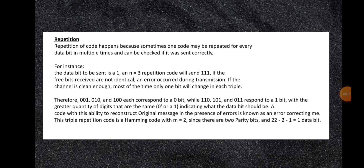The next topic is repetition. Repetition code happens when one code may be repeated for every data bit multiple times and can be checked if it was sent correctly. For instance, if the data bit to be sent is 1 and N=3, the repetition code will send 111. If the 3 bits received are not identical, an error occurred. If the channel is clean enough, only 1 bit will change in each triple. Therefore, 001, 010, and 100 each correspond to a 0 bit, while 110, 101, and 011 correspond to a 1 bit — with the greater quantity of identical digits indicating what the data bit should be. A code with this ability to reconstruct the original message in the presence of error is known as an error-correcting code.